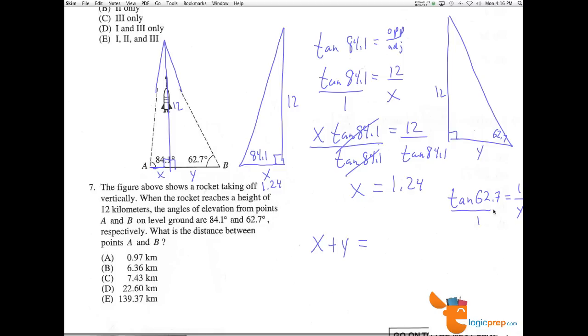Put this over 1. I'm going to go a little quicker now. Cross multiply. Y tan 62.7 equals 12. Divide both sides by the tangent of 62.7. And we find that Y is equal to approximately 6.19.